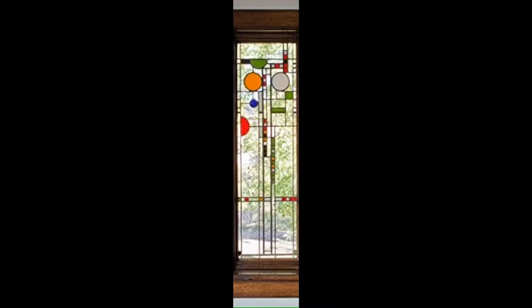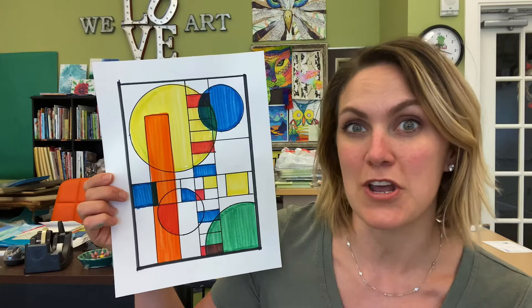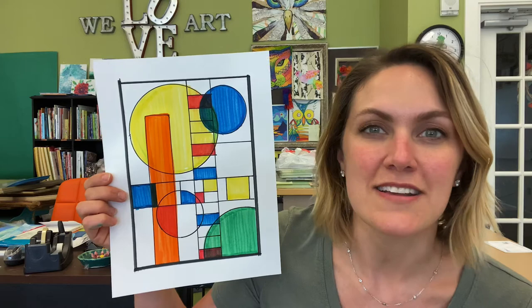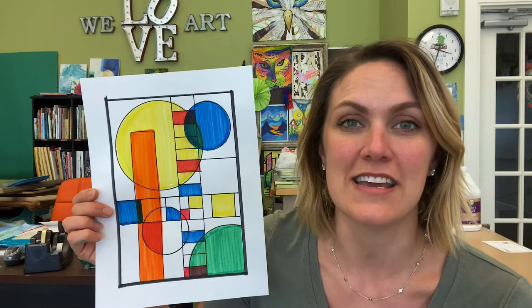So today we're going to be making our own Frank Lloyd Wright stained glass windows. You're going to notice on my stained glass window that there are lots of shapes. Frank Lloyd Wright was entranced or he was obsessed with shapes, especially the circle. You can see it all throughout his architecture.